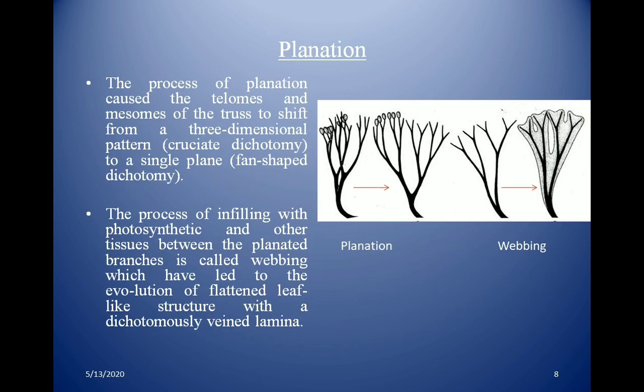The process of planation causes the telomes and mesomes of the truss to shift from a three-dimensional pattern to a single plane. Further, between these telomes, infilling with photosynthetic and other tissues occurs — a process called webbing — which leads to the evolution of a flattened, leaf-like structure with a dichotomously veined lamina.